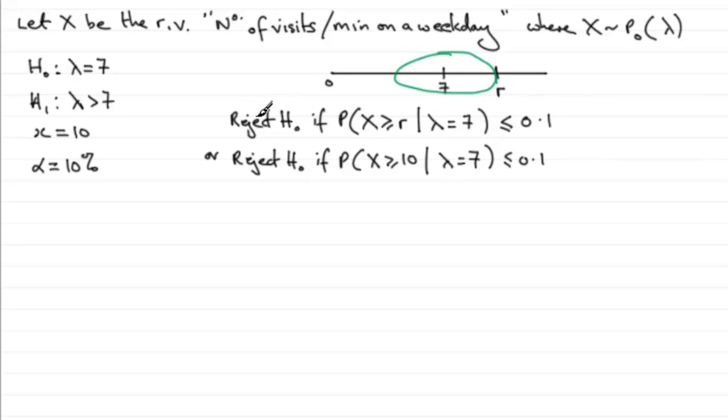And so we're going to go for this first condition to get R. We reject H0 if the probability of X being greater than or equal to this critical value, R, given that H0 is true, that is lambda equals 7, the mean is 7, turns out to be less than or equal to the 10%, or 0.1, our significance level here.